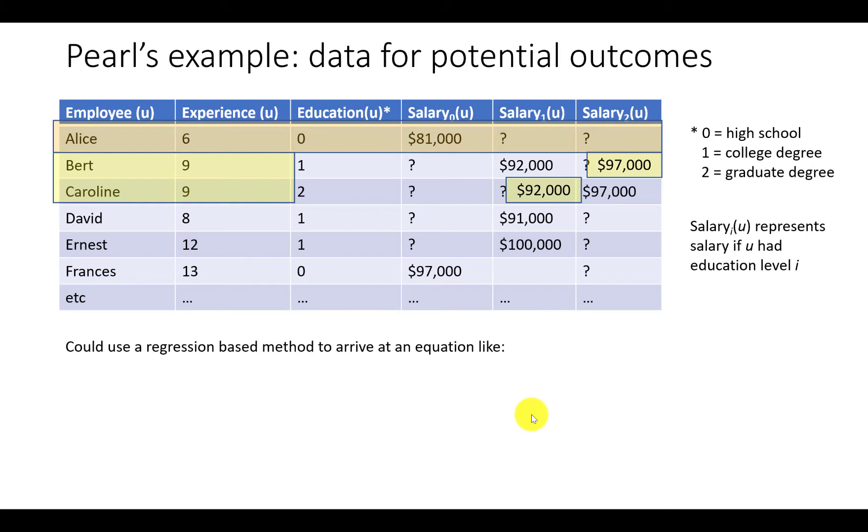We could apply classical regression to the data and learn an equation like this. Salary is $65,000 plus 2500 times years of experience plus 5000 times education level. Using this equation, we can predict, for example, that Alice's salary, if she had a college degree, is $65,000 plus 6 times 2500 plus 5000, that's $85,000.